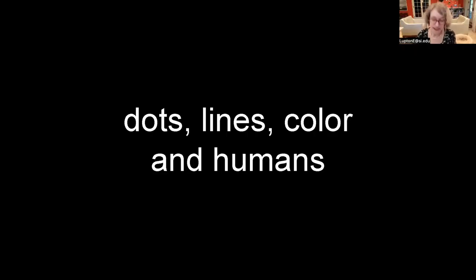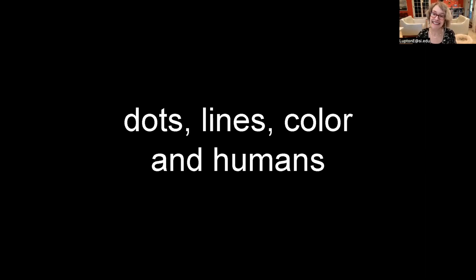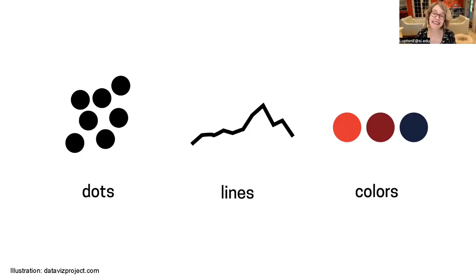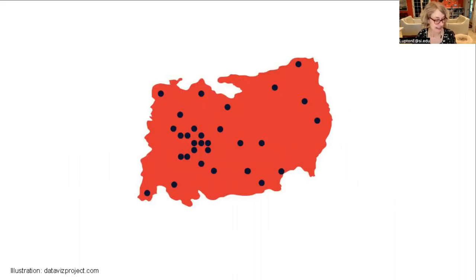Let's try to understand data graphics by walking through the most basic elements of graphic design: dots, lines, color, and humans. Data graphics show what the eye can't see. Dots on a map help us see geographic patterns.